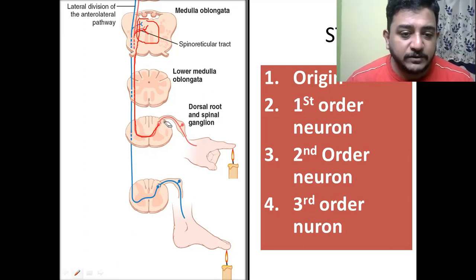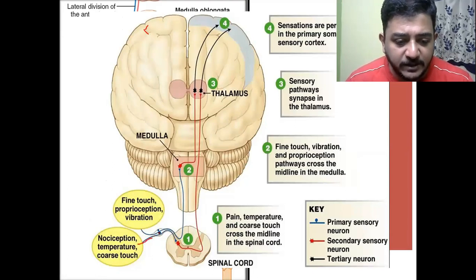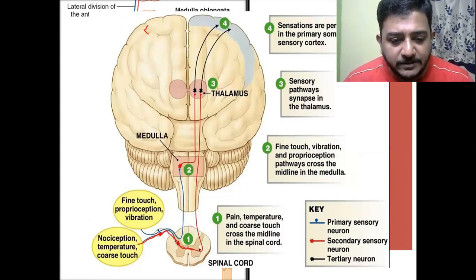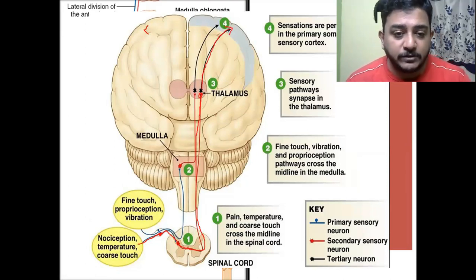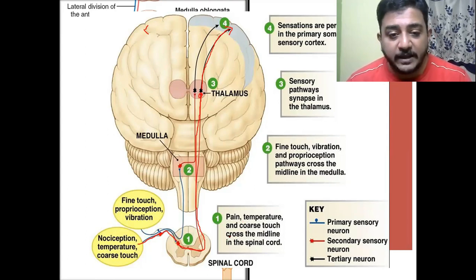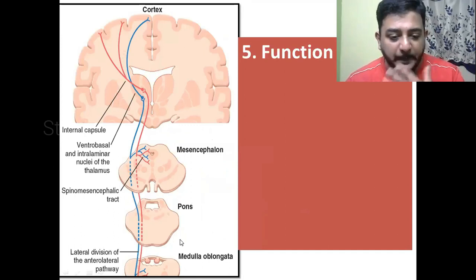Where are these order neurons located? The first order neuron for the nociceptive stimulation is located in the posterior root ganglion and ends in the posterior horn cells. From here the second order neuron carries the information upward and goes up to the thalamus. From the thalamus, the third order neuron starts and conveys the information to the cerebral cortex. The first order neuron and second order neuron have a lot of physiological differences, which I leave to the audience to research, as that difference clearly explains pain transmission.